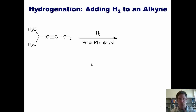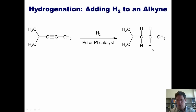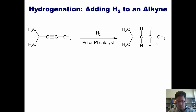You can also add hydrogens across a triple bond in an alkyne. However, with standard palladium and platinum catalysts, the alkyne gets fully reduced or hydrogenated to an alkane. In other words, under these conditions you can't take an alkyne and reduce it just to an alkene.